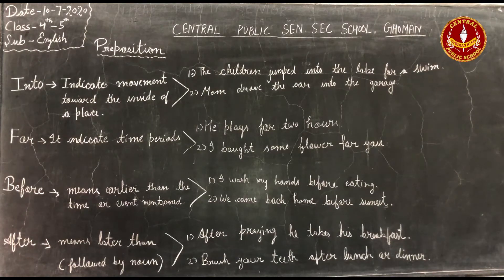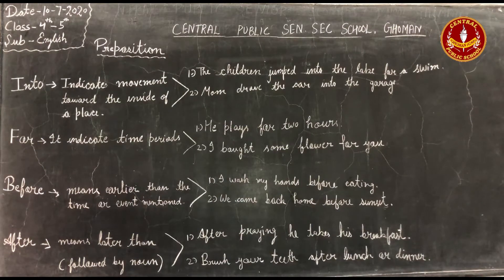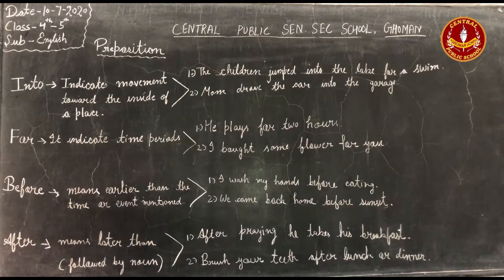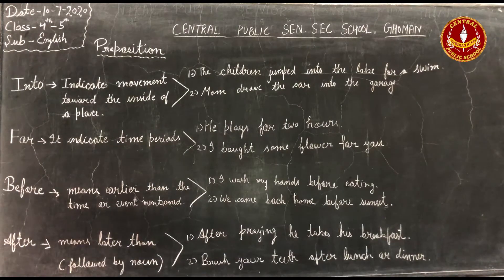Next, preposition 'for'. It indicates time periods and is also used to show who something is intended for, or where something is intended to be put. For example: 'I bought some flowers for you.'